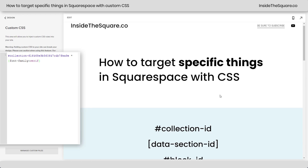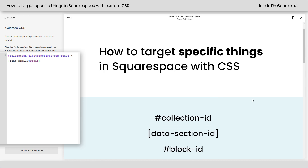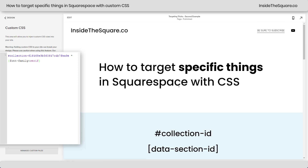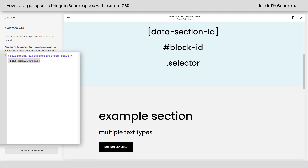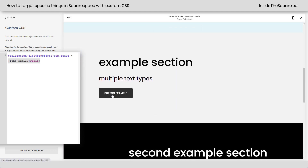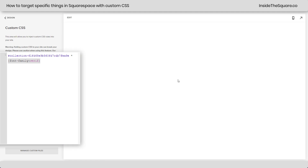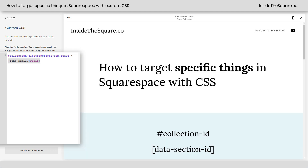Now let's click on a different example on a different page in my site. You'll see this page, which was a duplicate of that other one, has the original font — it doesn't have font-family serif. That was only applied to the other collection. So clicking back, this page is the only page that has that font assigned to it.